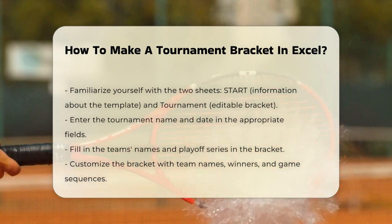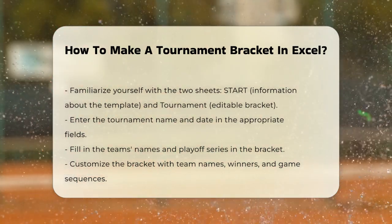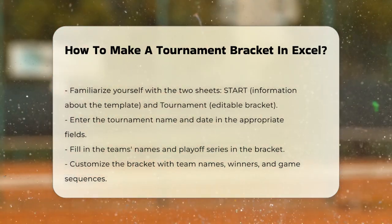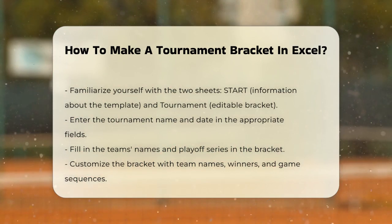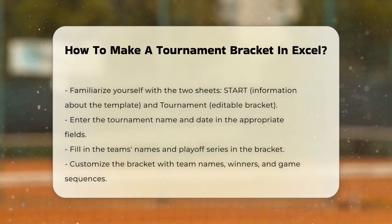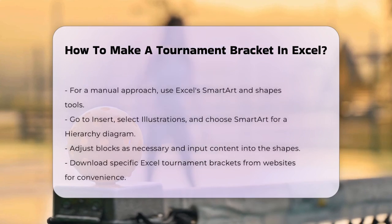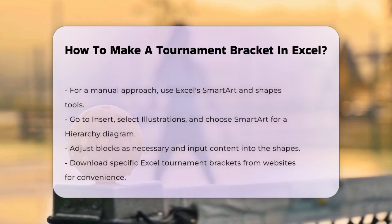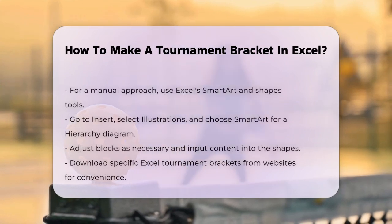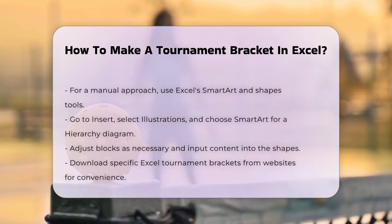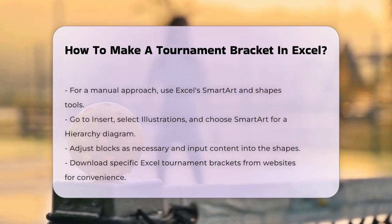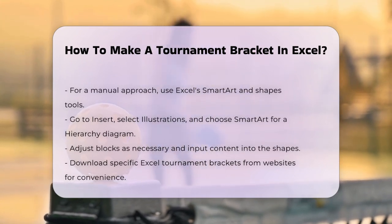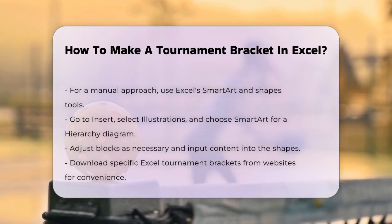If you prefer a more manual approach, you can use Excel's SmartArt and Shapes tools. Go to Insert, then Illustrations, and select SmartArt. Choose a hierarchy diagram, specifically a horizontal hierarchy, to create the tree-like structure of a tournament bracket. Add and remove blocks as needed, and enter the content into the shapes.